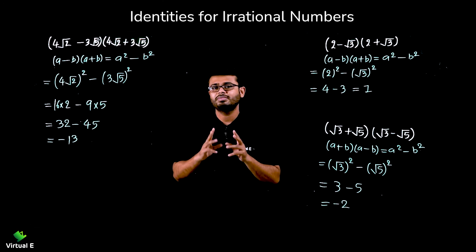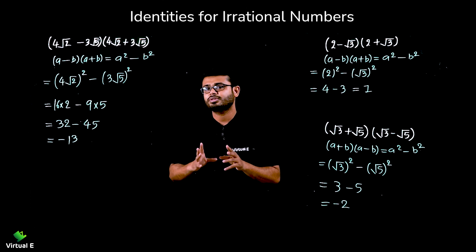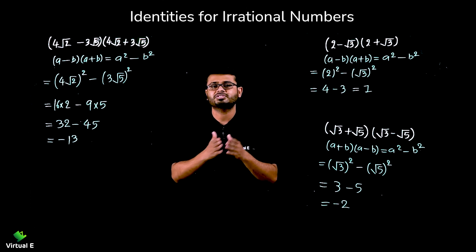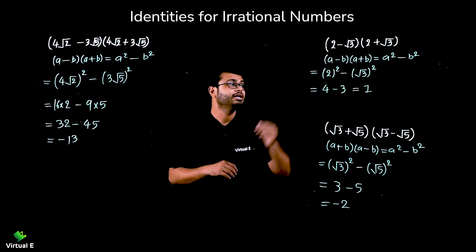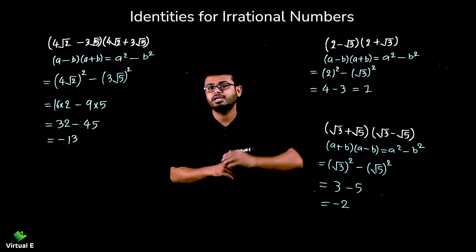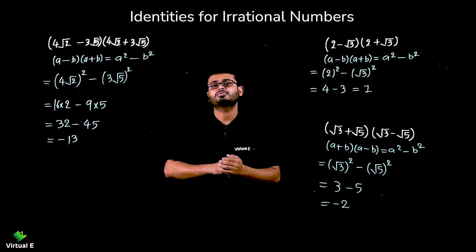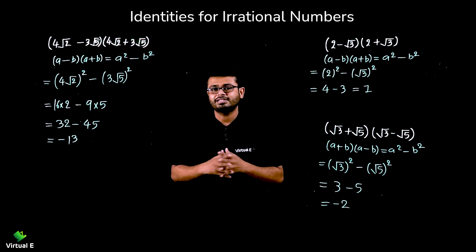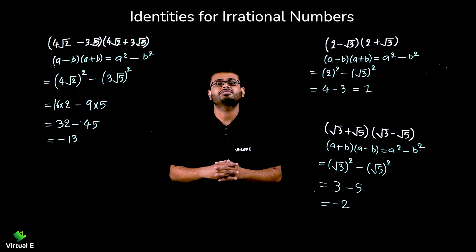So we discussed basically two or three identities: (a + b) whole square, (a - b) whole square, then (a - b)(a + b). This is how we approach algebraic identities in the context of irrational numbers.